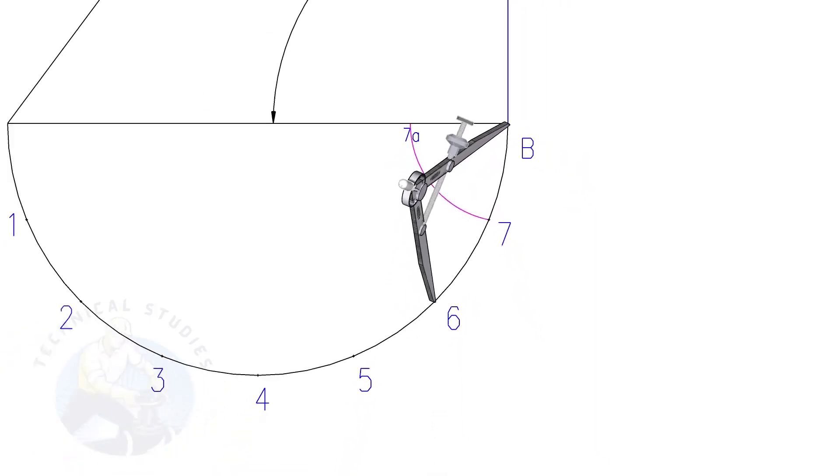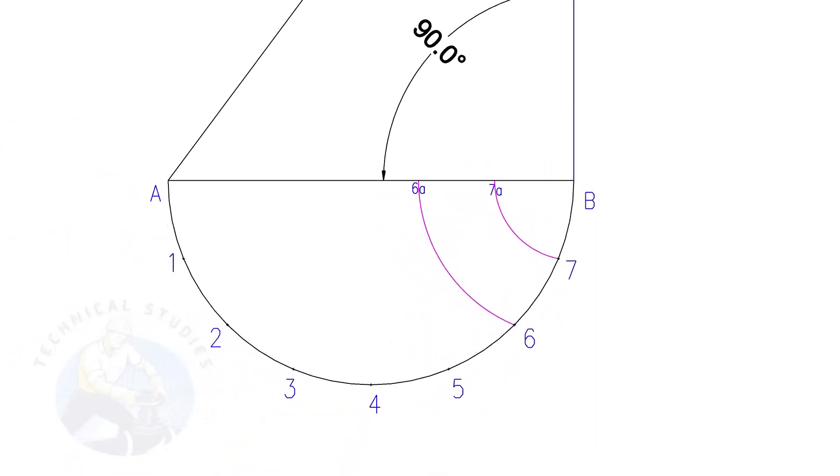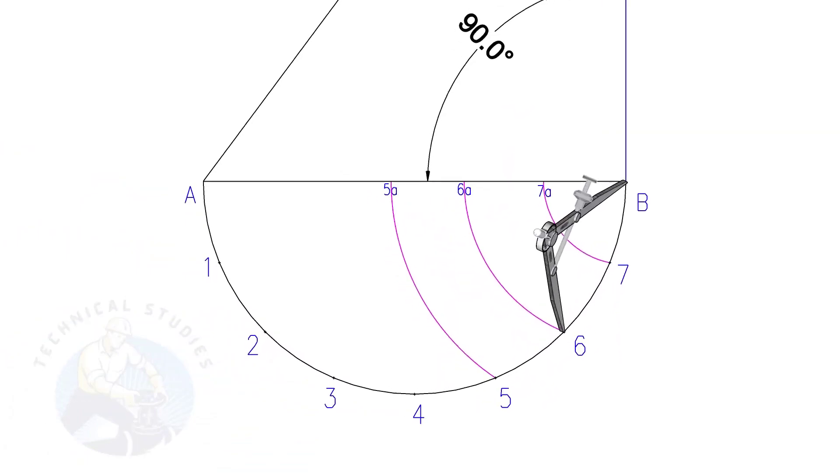Draw arcs as shown. Remember, we are going to lay out half part of the cone only, means actually we are dividing the bottom into 16 parts.